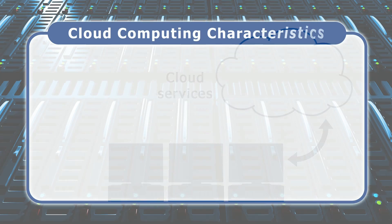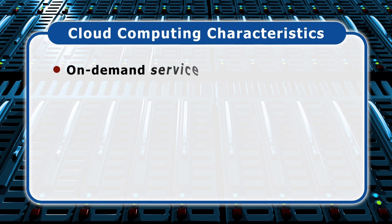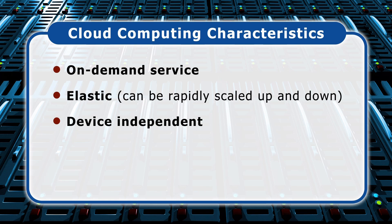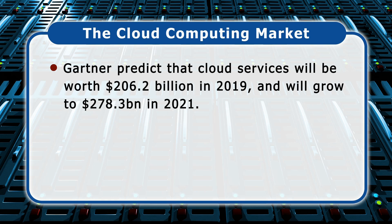Cloud computing has three key characteristics. Firstly, it's an on-demand service that a customer can purchase as their needs dictate. Secondly, cloud computing is elastic, as the customer can increase or decrease the quantity of computing resources they require on a very rapid basis. And finally, cloud computing is device-independent, as cloud services can be accessed on any computer with an internet connection. Gartner predicts that the cloud services marketplace will be worth $206.2 billion in 2019 and will grow to $278.3 billion in 2021.